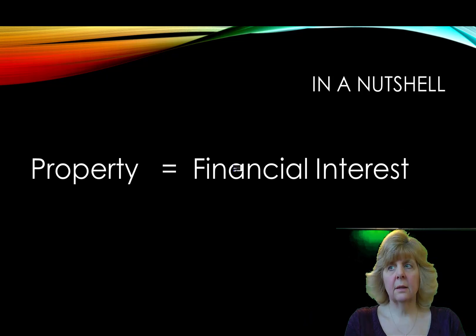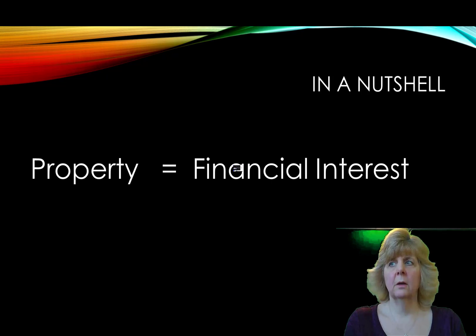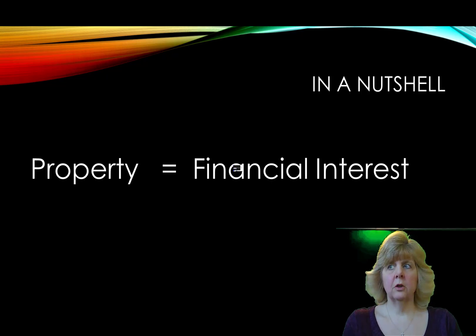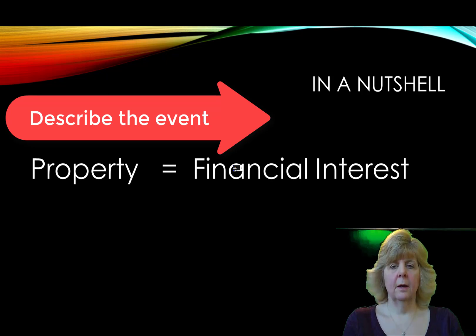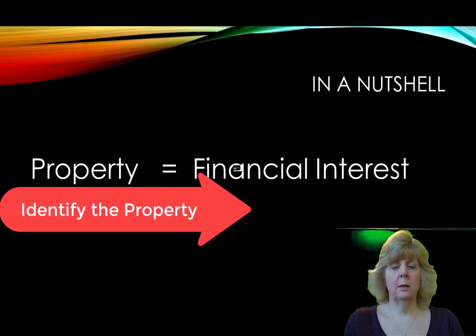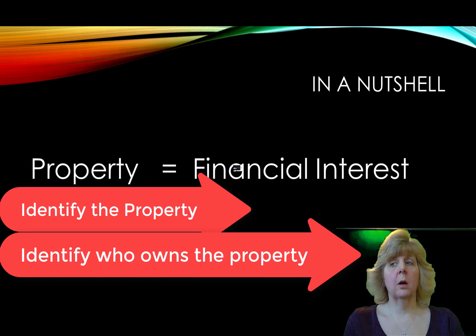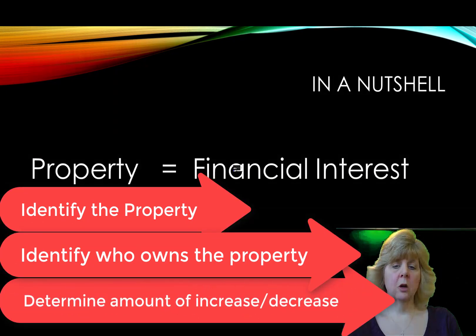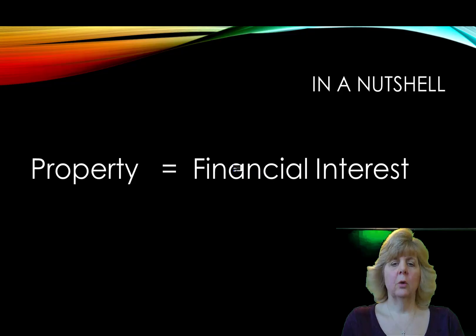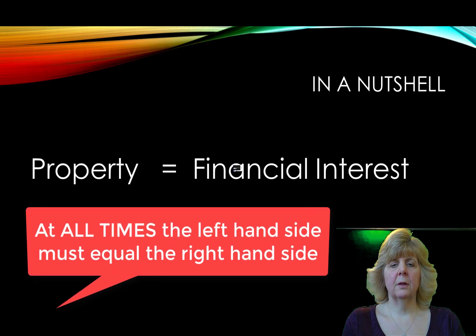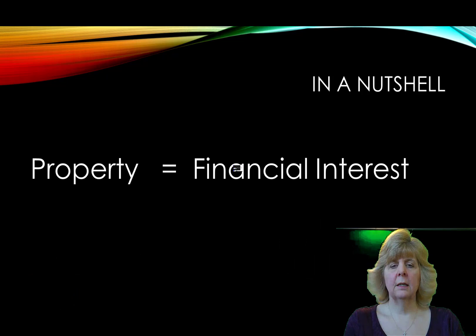Your author tells us to think about three things as we learn to analyze transactions. You want to describe the financial event to yourself. This is three steps: first, identify the property; then identify who owns the property; and then determine the amount of increase or decrease in each account. Your author continues by giving examples of several transactions that a business is likely to encounter in its startup.